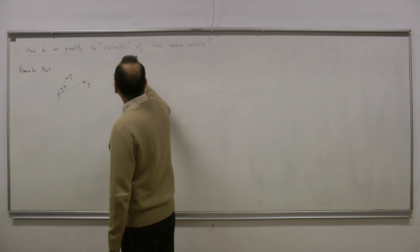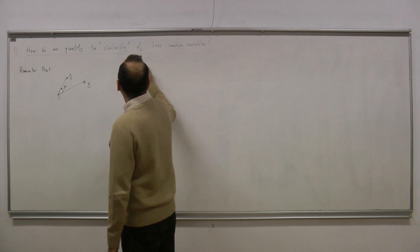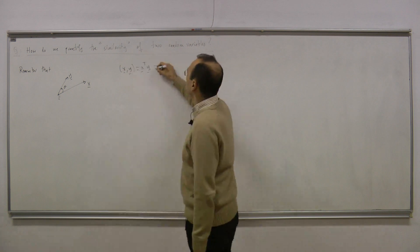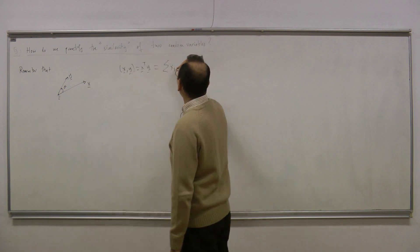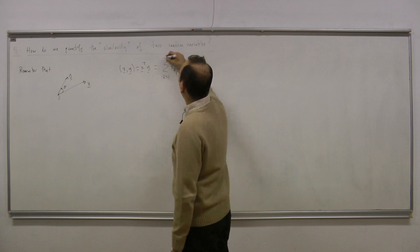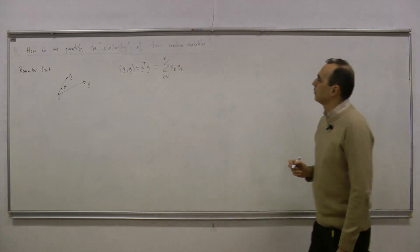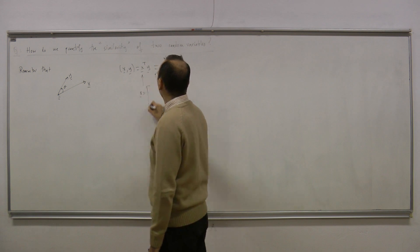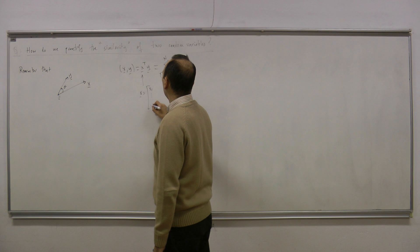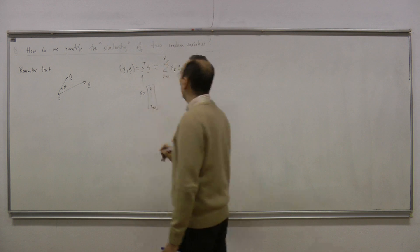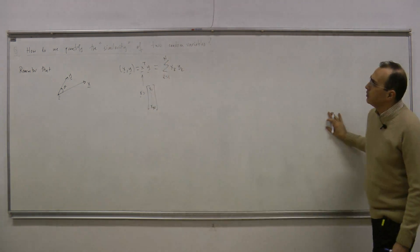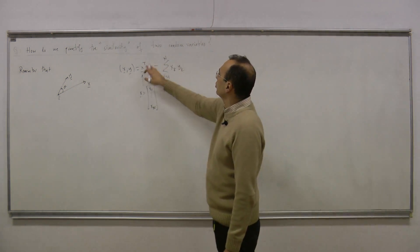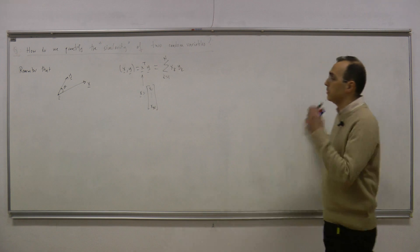Let's define the usual inner product. If we have a vector x in n dimensions with entries x1 up to xn, the inner product is the element-wise multiplication and then summation of all the products.